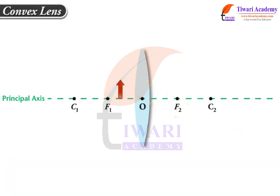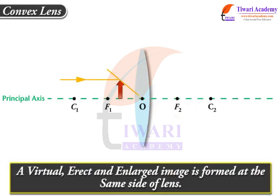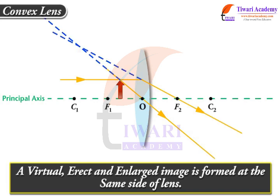A virtual, erect and enlarged image is formed at the same side of the lens when an object is placed between principal focus F1 and optical centre O of a convex lens.